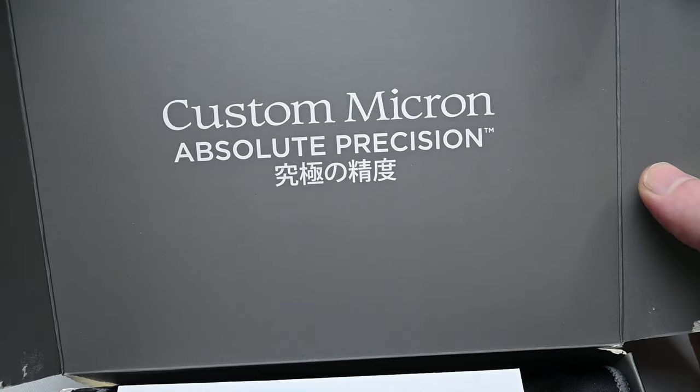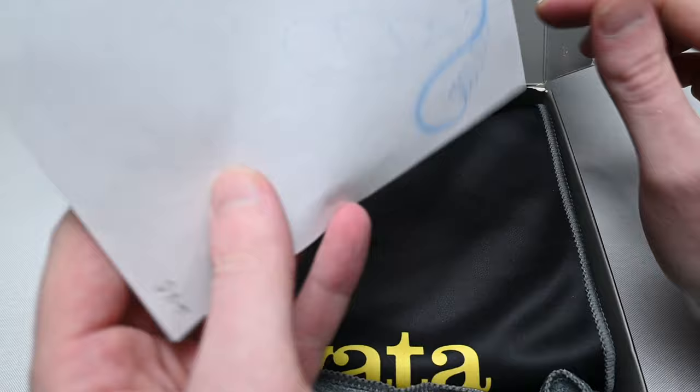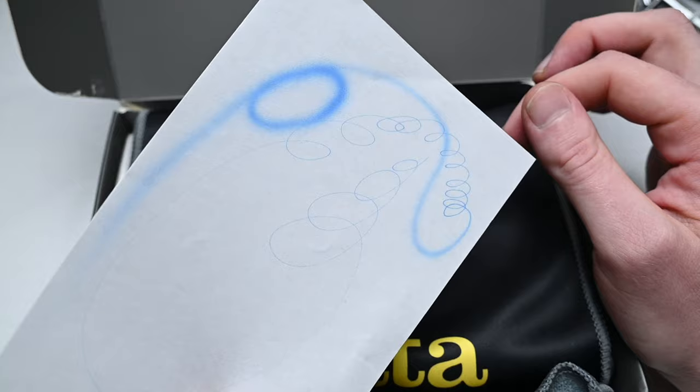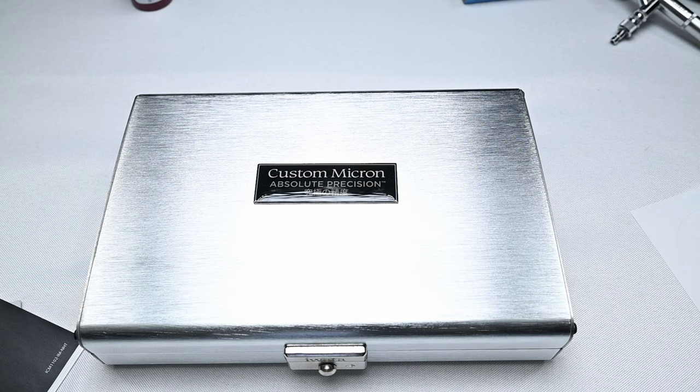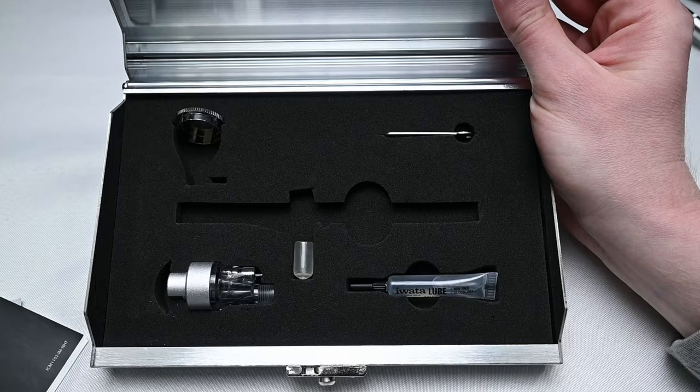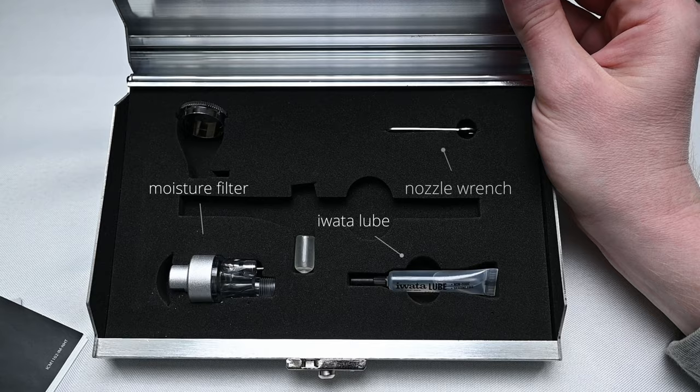When you purchase this airbrush, it comes packaged in a cardboard box, and inside here you have the spray-out test of your particular airbrush, and you also get this very nice large microfiber cloth with the Iwata logo on it. And the airbrush is packaged in this very nice heavy-duty box. This thing feels very well made. Besides the airbrush, you get one of these small spanner wrenches to remove the nozzle if you need to. You also get some Iwata lube and one of the Iwata pistol grip moisture filters. So you do get a few extra accessories with this airbrush, which is nice to see.